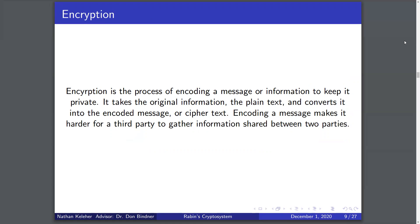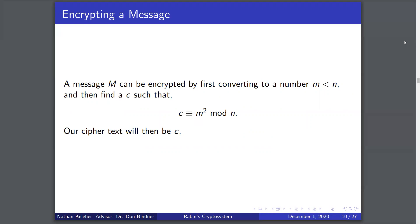The encryption process is the encoding of information that keeps it private. We call it the plaintext message before it's encrypted, and when it is encrypted, we call it the ciphertext. Encoding a message makes it harder for a third party to gather the information. We take a message M, first convert it to a number lowercase m that is less than N, and then find a value C satisfying C ≡ m² mod N. C will be our ciphertext.